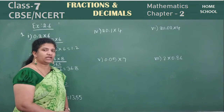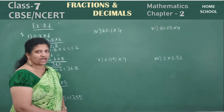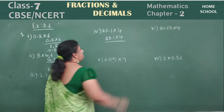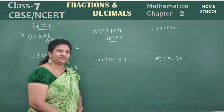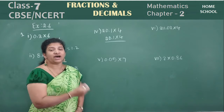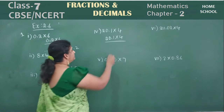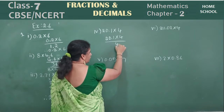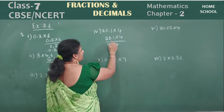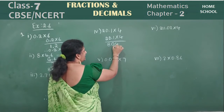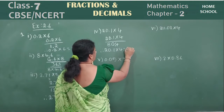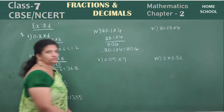Fourth one: 20.1 into 4. You can try to say the answer directly. 4 ones are 4. 4 zeros are 0. 4 twos are 8. After 1 value, put a decimal point. Therefore, 20.1 into 4 is equal to 80.4.